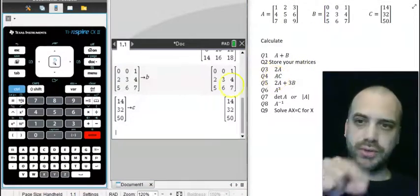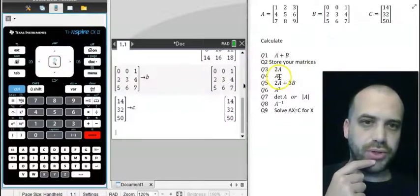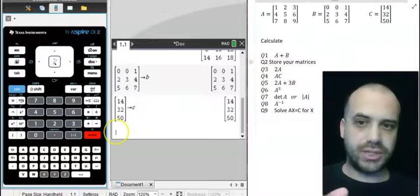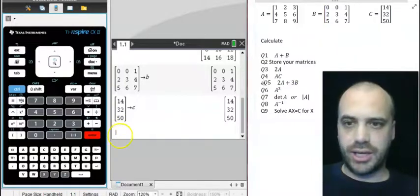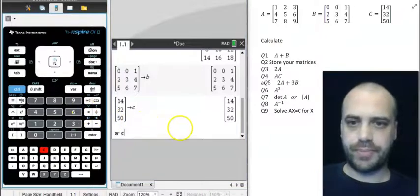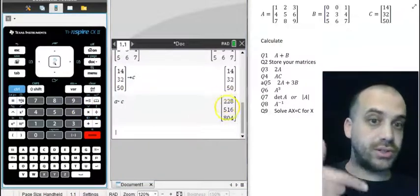And so now it's really straightforward that I've stored those matrices because now if I want to do say question four here, which is matrix A times matrix C, I just write A times C. And I get A times C.